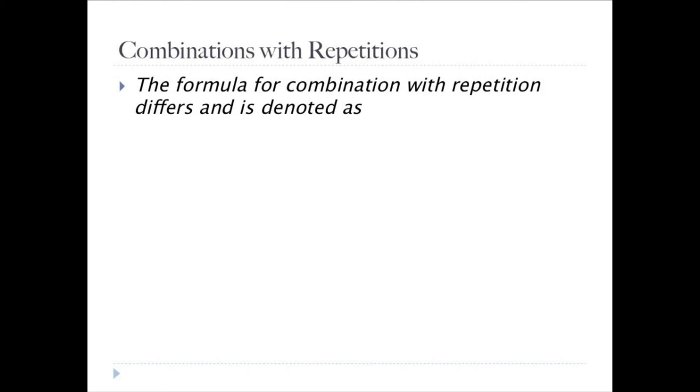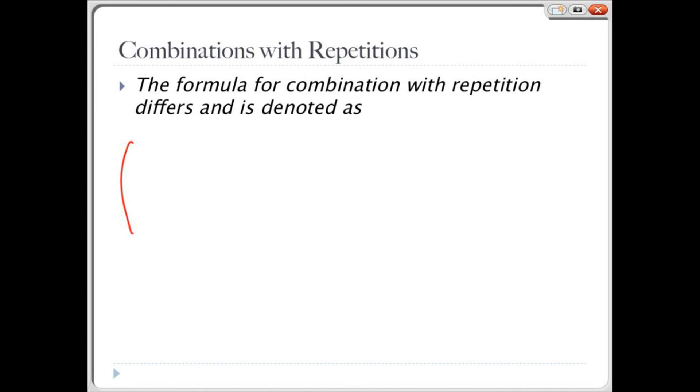So, this is the formula for combinations with repetition. It is n plus r minus 1, choose r, which is the same as saying n plus r minus 1 factorial over r factorial times n minus 1 factorial, where n is the number of things to choose from, and you can choose r of them.